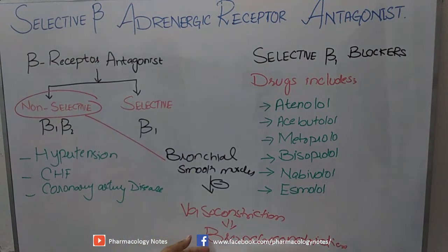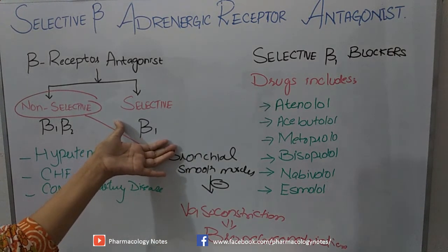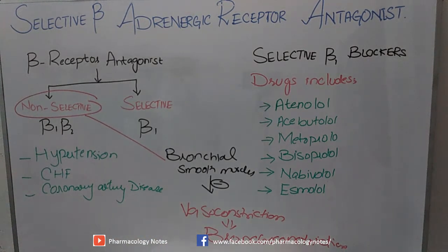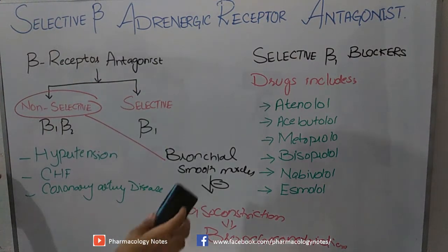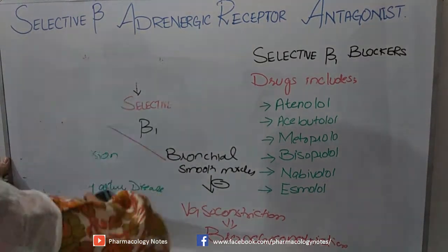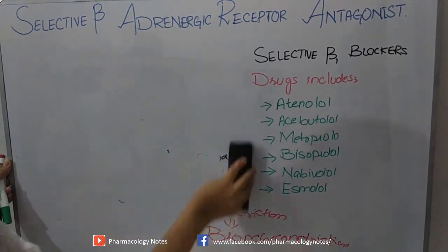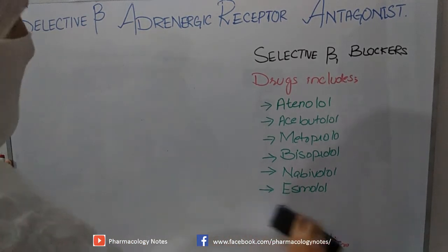To eliminate this side effect of bronchoconstriction, a new class of drugs is used: selective beta-adrenergic receptor antagonists, or selective beta-blockers. These drugs are also used in hypertension but do not cause bronchoconstriction, and are preferred for patients suffering from COPD or asthma.